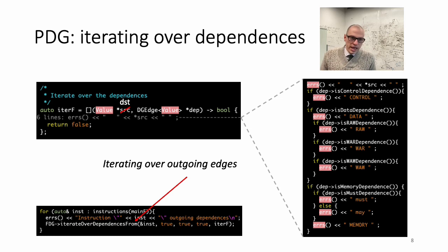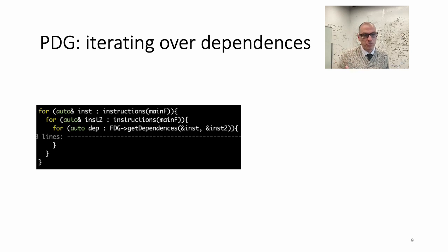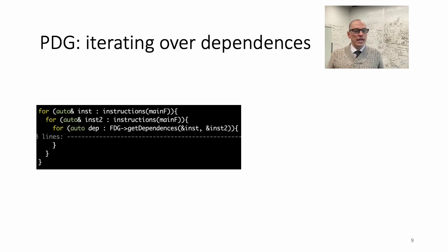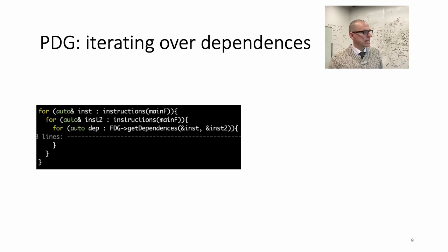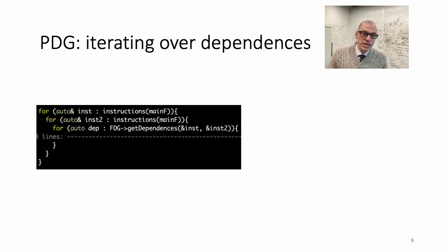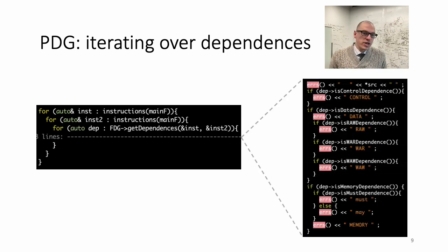You can also iterate over outgoing edges — the API is very similar, and the only difference is that the first parameter is now the destination of the dependence. You also have another way to iterate over dependencies. From the dependence graph — either the function-dependence graph or program-dependence graph — you can ask the abstraction to return the set of dependencies that exist between two instructions. As a return, you have the same dependence object we saw previously, and you can query it in the same way: is this a control dependence, a memory dependence, et cetera. Therefore you can use exactly the same code.